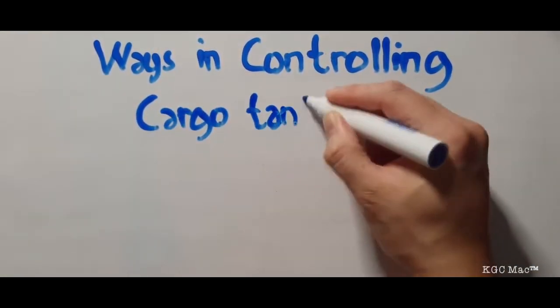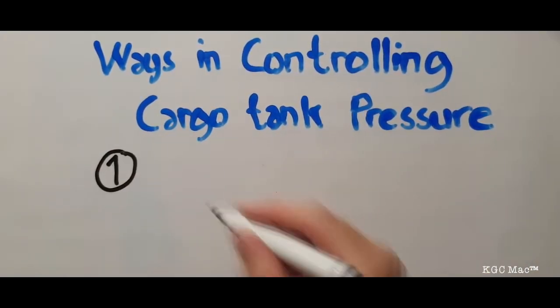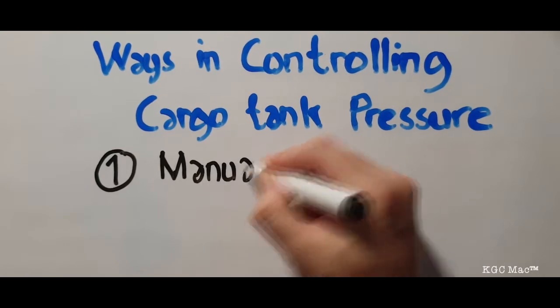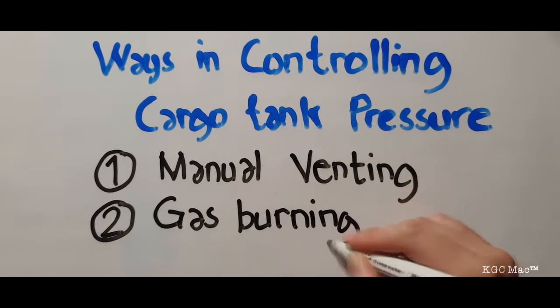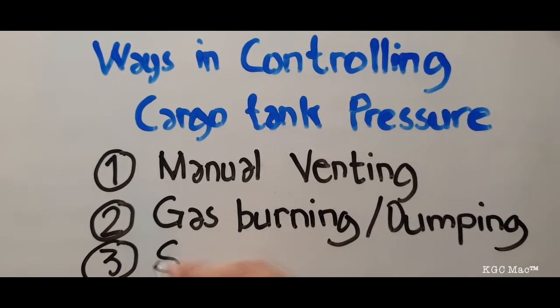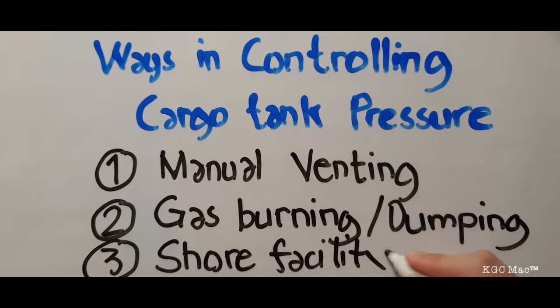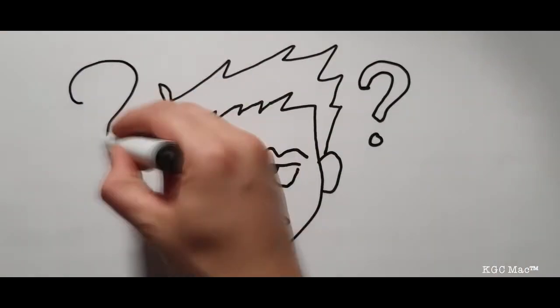Here are the ways to control our tank pressure on board. Number one, manual venting, or simply just call it venting. Number two, gas burning and dumping. Number three, sending it to shore or shore facilities, or they call it also vapor return. Now let's discuss each one of them.